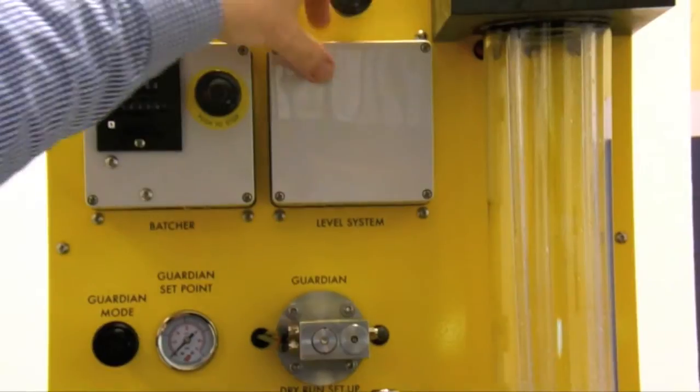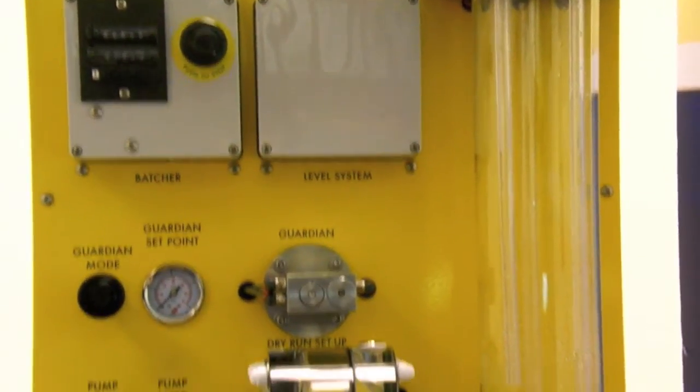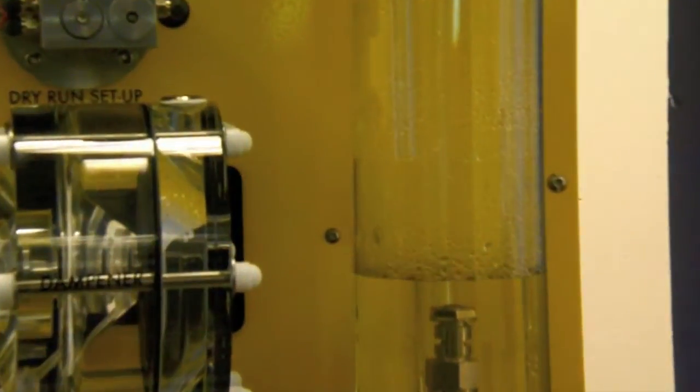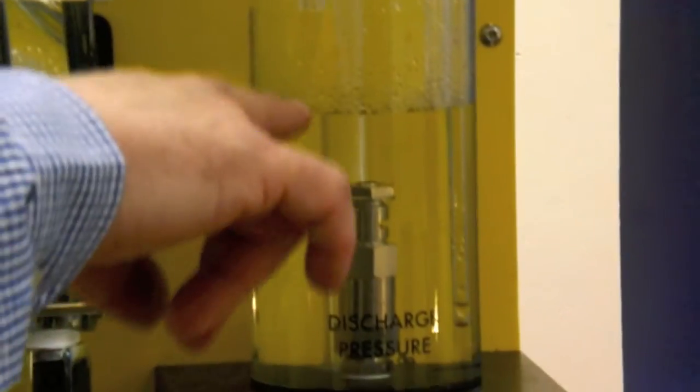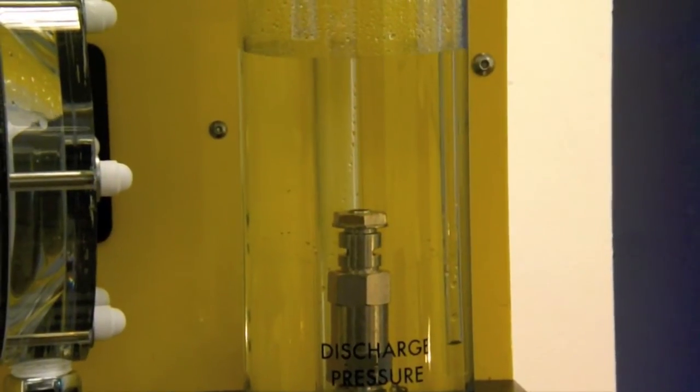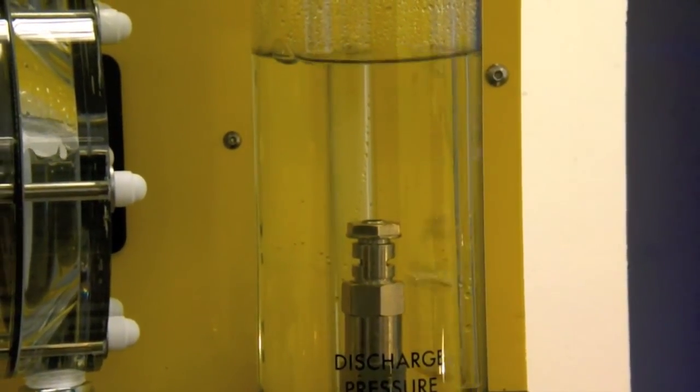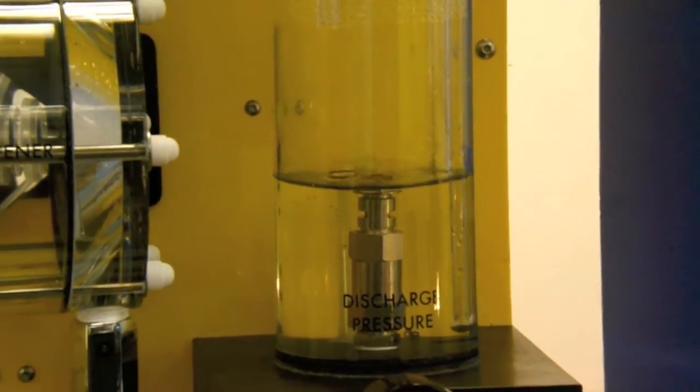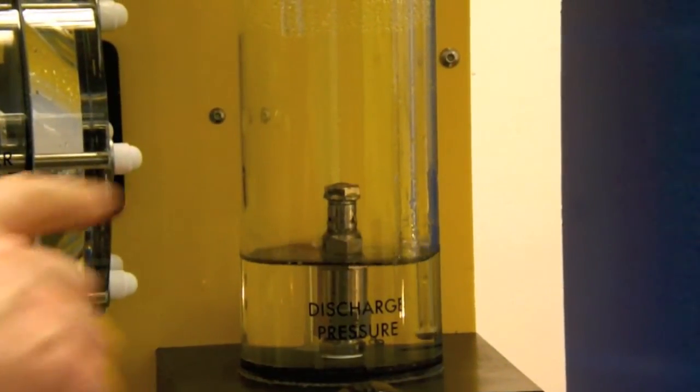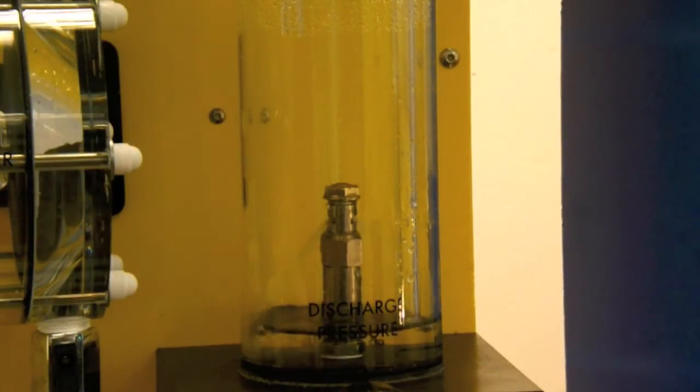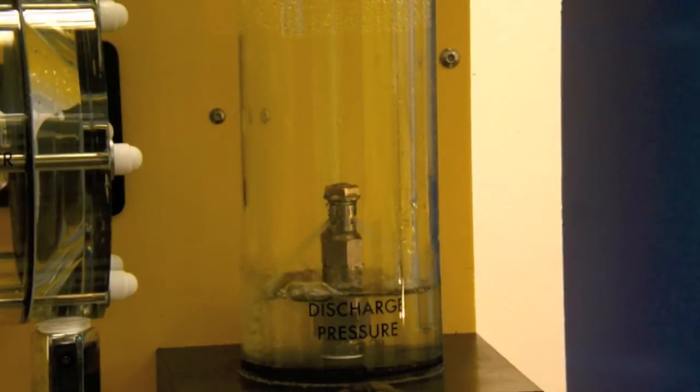The next system I am going to show you is our level control unit. Here the unit is programmed to fill the top tank here until it reaches our high level sensor. Once the liquid level reaches our high level sensor the pressure change in the tube will be picked up by our level control unit and it will shut the pump off. It is also programmed here to drain the top tank until it exposes our low level probe. And once our low level probe is exposed the pump will come back on and refill it up to the high level. So this system is very useful for maintaining levels in production tanks and production vessels.